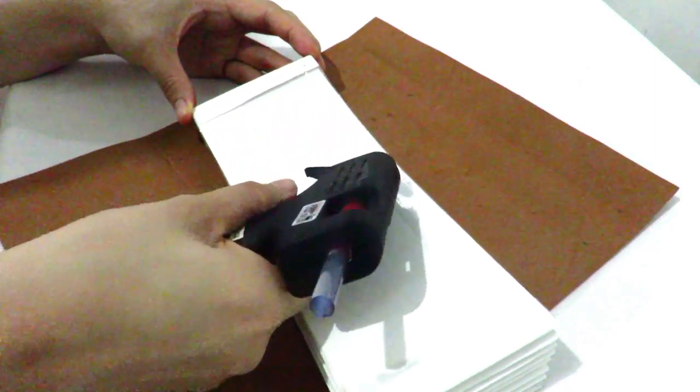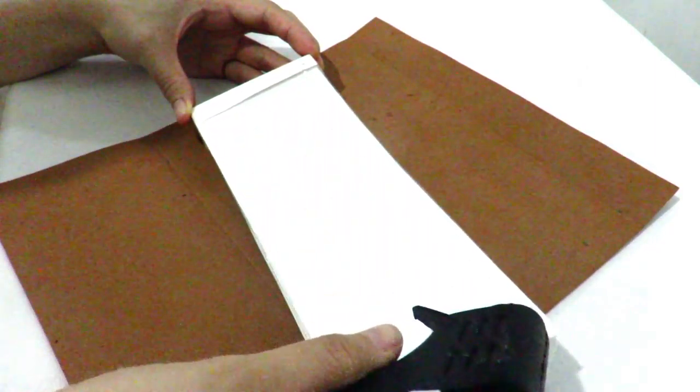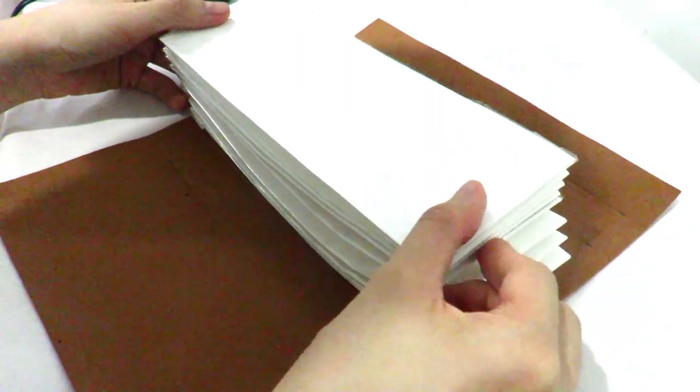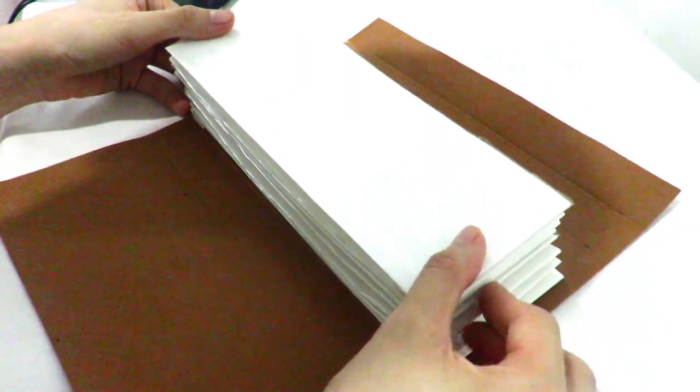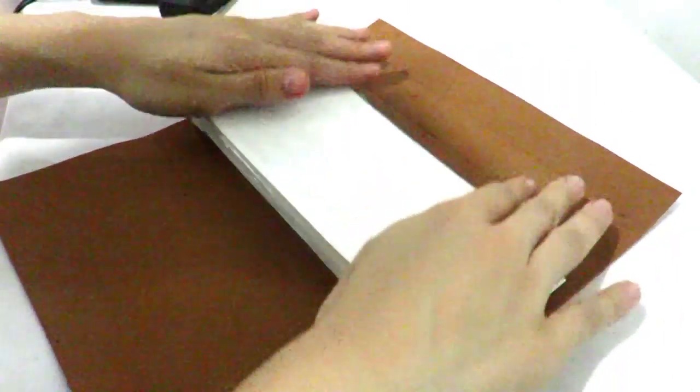Next, take your hot glue gun and line the sides of your dividers and stick it on the felt paper. Do the same for the front cover and give the envelope a good press to make sure everything sticks together.